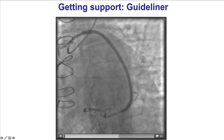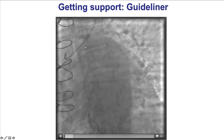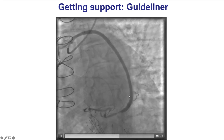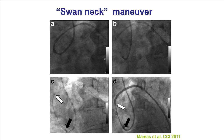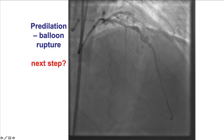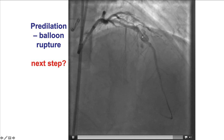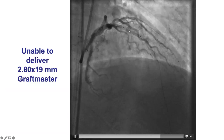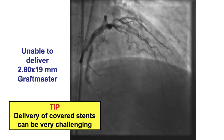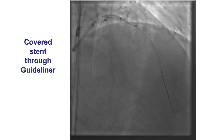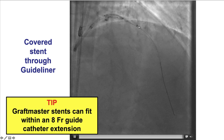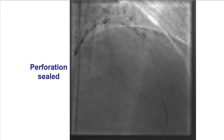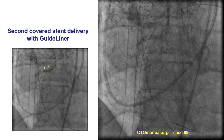This is an example showing how a deeply intubated guide catheter extension can facilitate the support for equipment delivery into this saphenous vein graft. Sometimes there can be a maneuver in which the guide extension is advanced deeply into the vessel, and then the guide is resting against the aortic wall, facilitating extra support. This is an example of a coronary perforation in which a graft master could not be delivered through that area of perforation because of calcification and tortuosity, which is not uncommon for covered stents. But using a guide extension, the graft master could be successfully delivered to that area of perforation and successfully sealed that perforation.